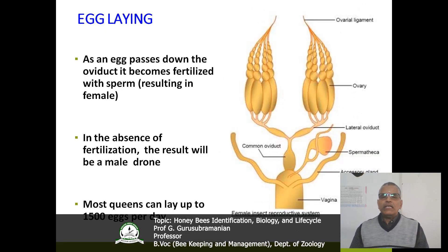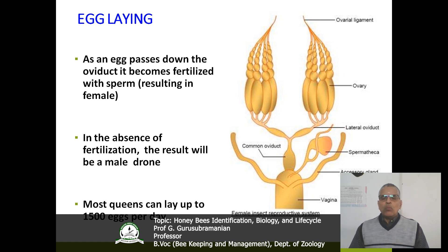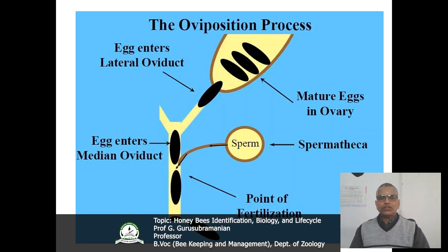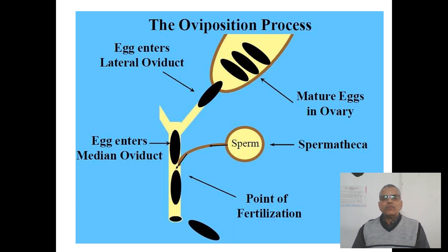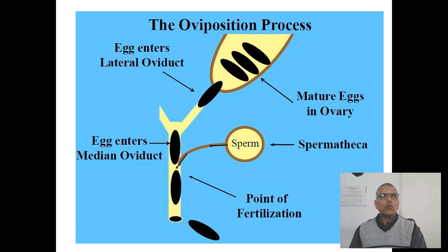Regarding egg laying: normally the egg passes down the oviduct and then becomes fertilized with sperm. In the absence of fertilization, the result will be a male drone. Most queens can lay up to 1500 eggs per day. The oviposition process involves the egg normally entering from the lateral oviduct and entering into the median oviduct, where the spermatheca meets with that median oviduct and where fertilization normally takes place. Once fertilization takes place it becomes a queen; otherwise it becomes a male.